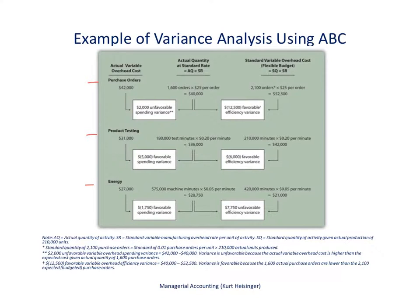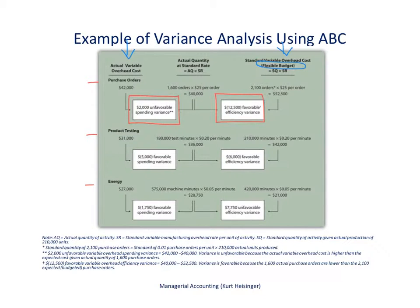Going from left to right, you see the actual variable overhead costs in the left column. We have three different activities: purchase orders, product testing, and energy. Over in the far right, you'll see the flexible budget — what we expected to spend in each of these areas. We have two different variances that describe the difference between actual and expected variable overhead cost: the spending variance and the efficiency variance. We'll look at just the purchase orders activity here.